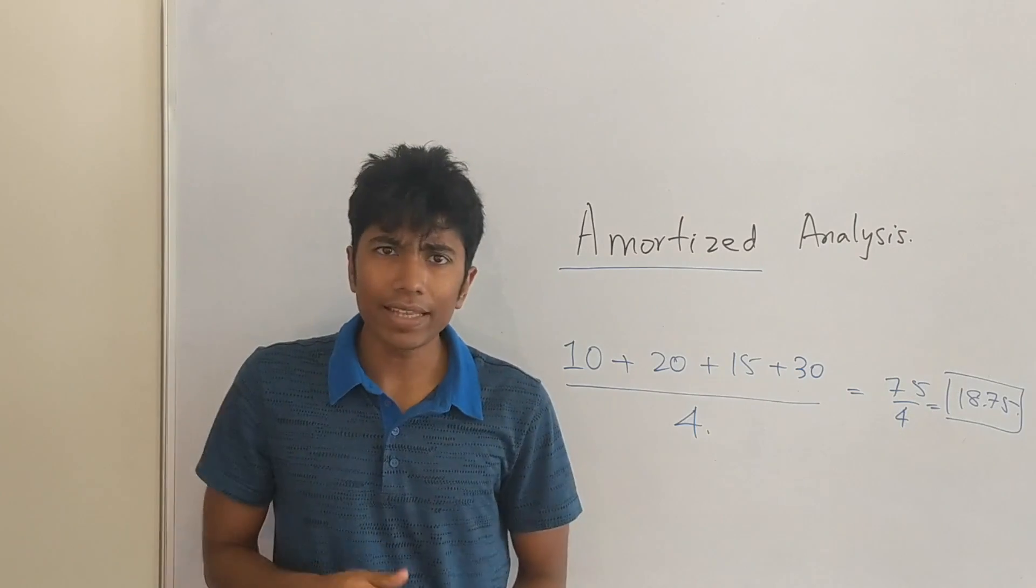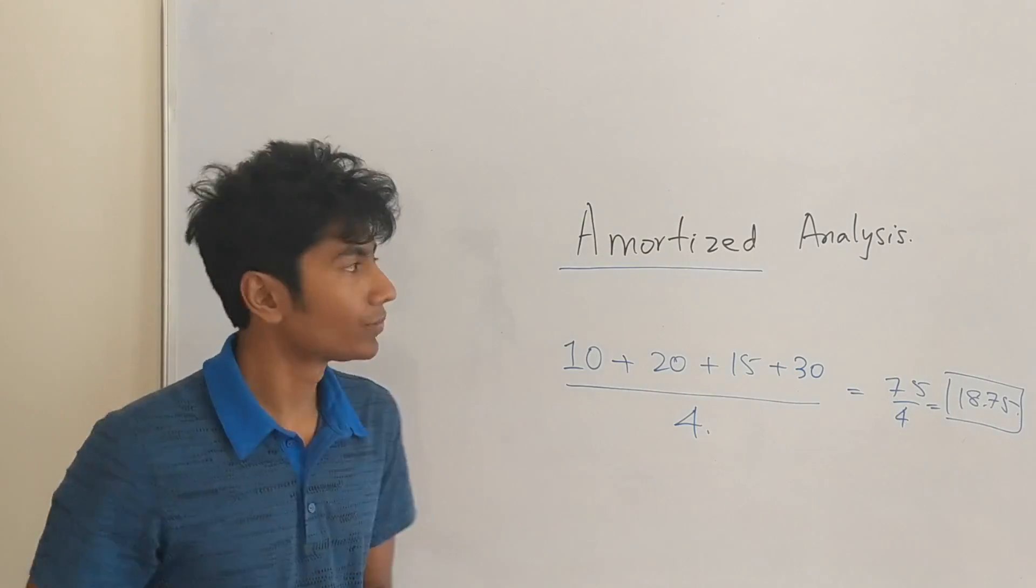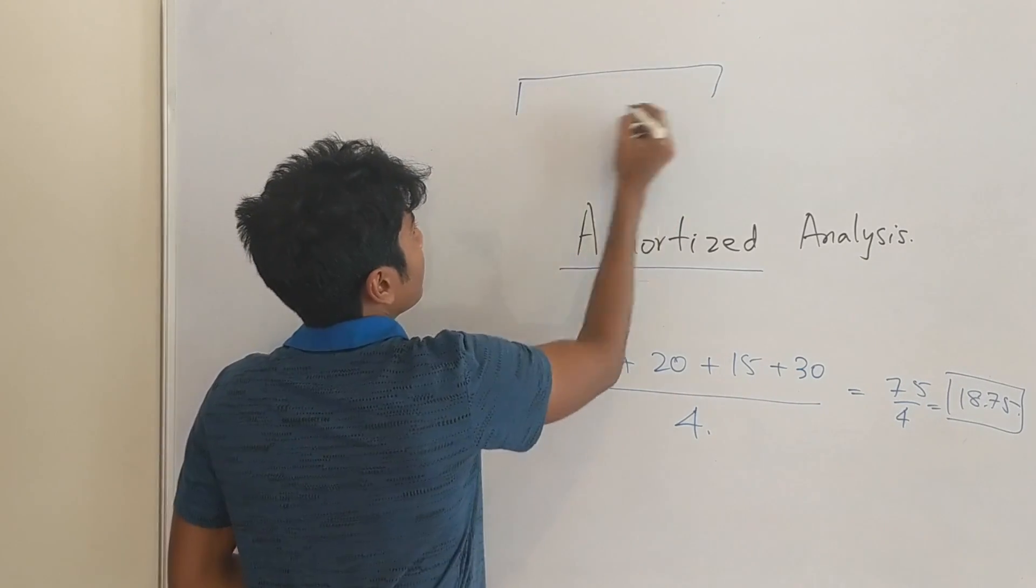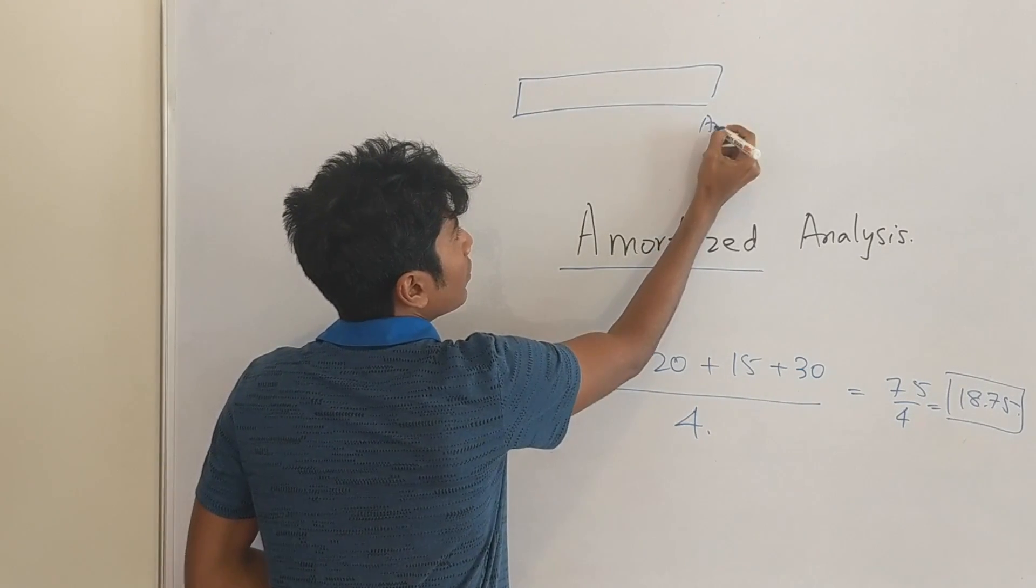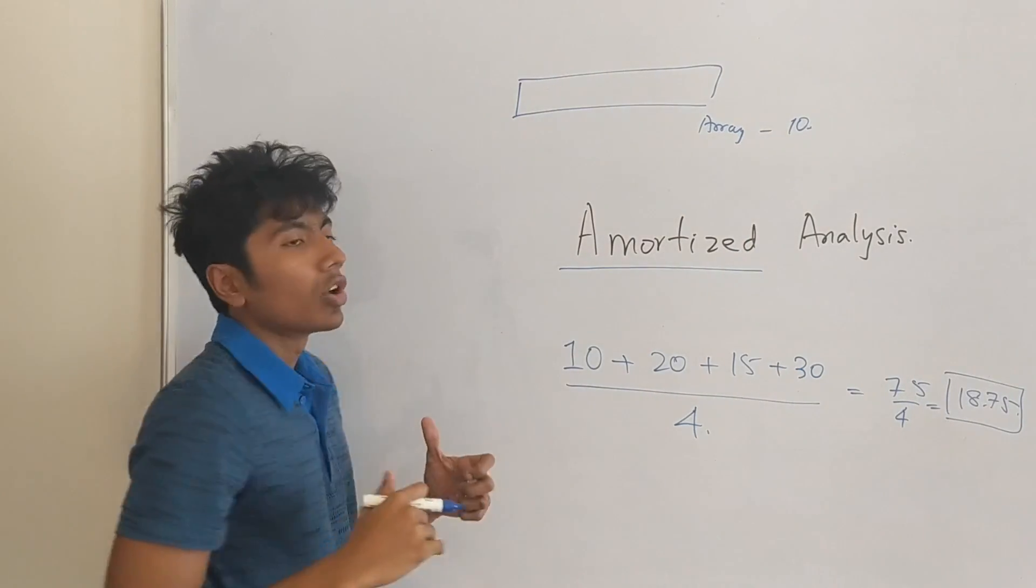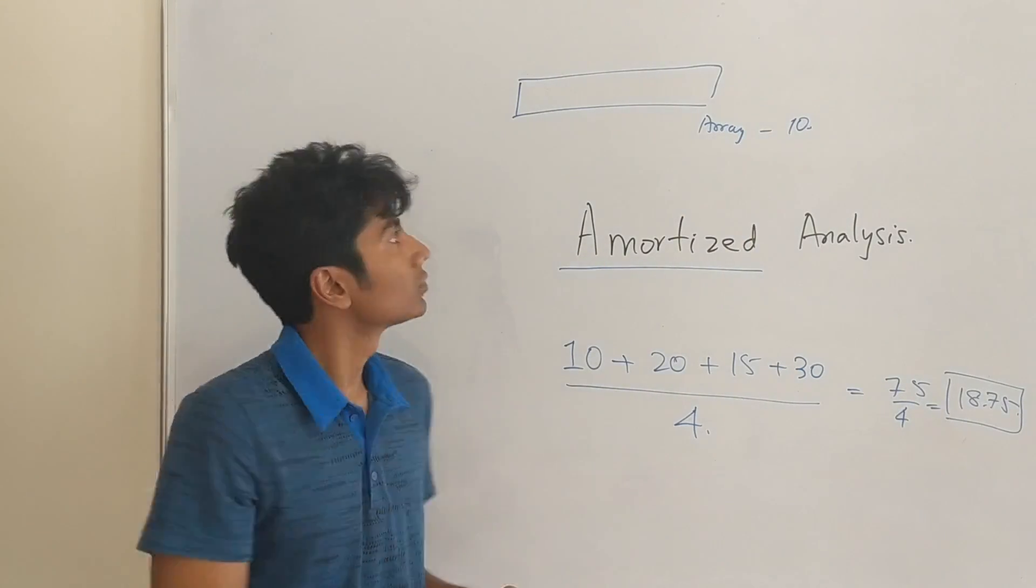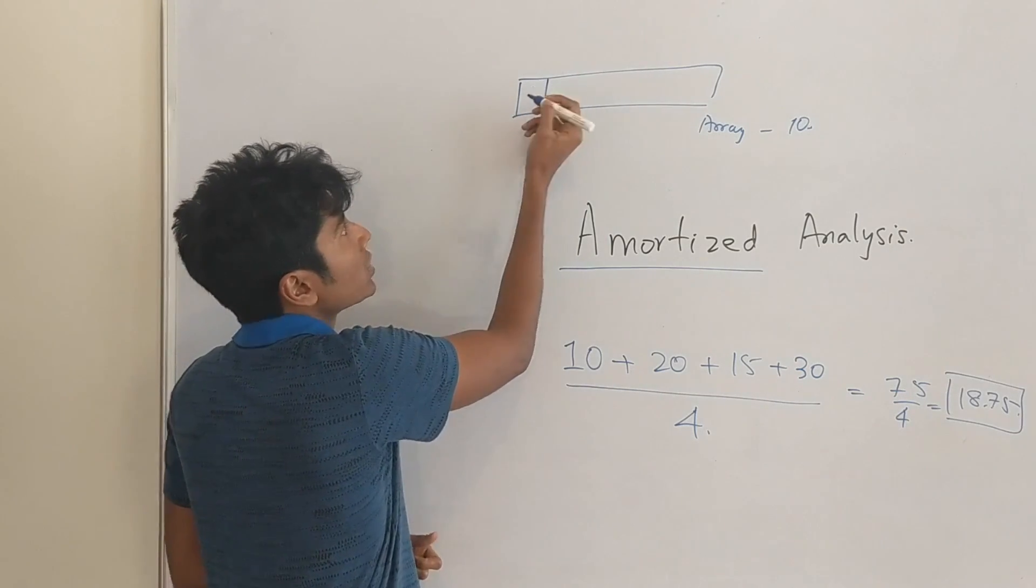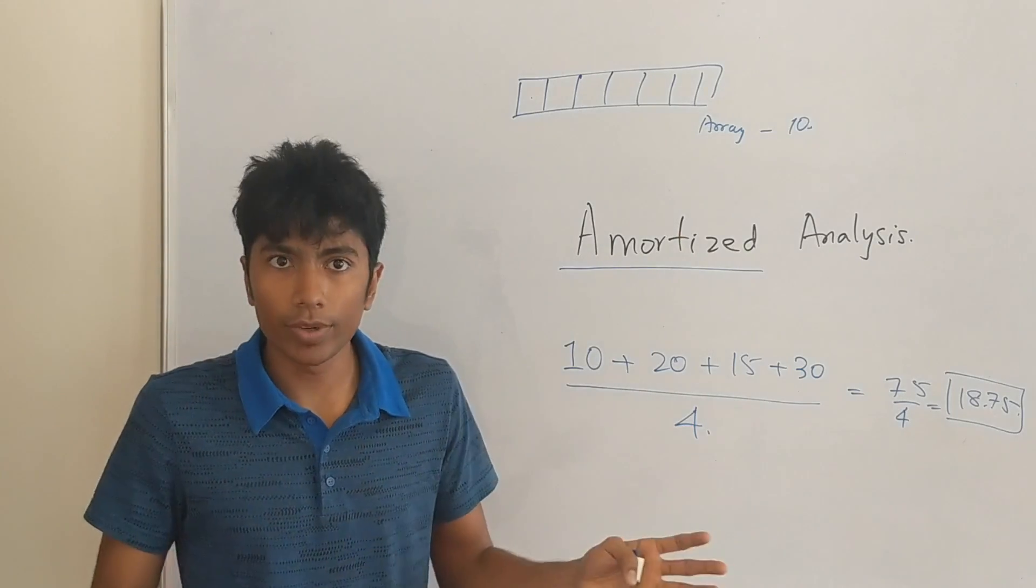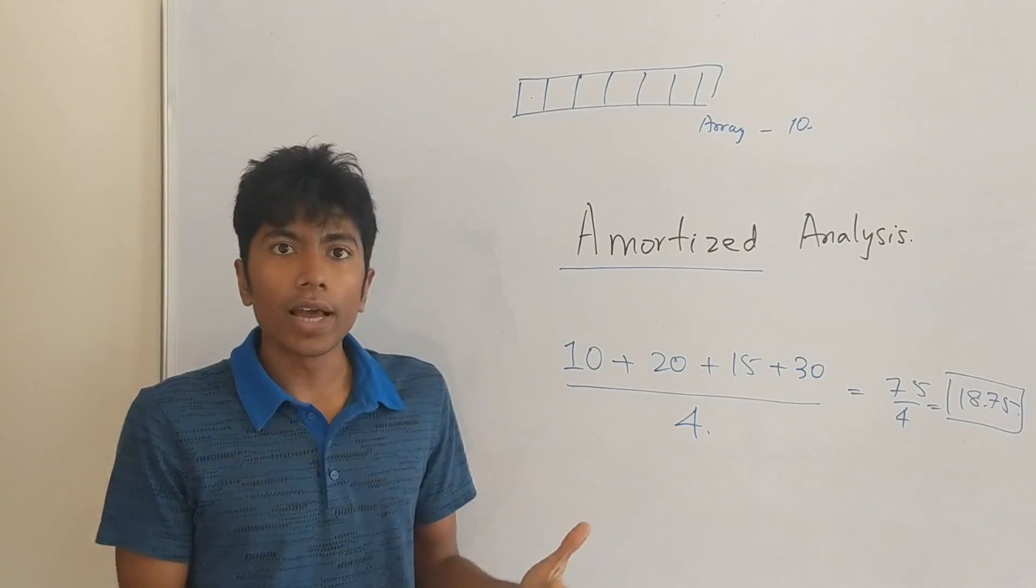So let's take a very simple example. Let's take an array list. Initially you have an array of size 10. Now you are making insertions in this array. So you insert an element, you insert another element, so on and so forth up till you hit the maximum number of elements which is 10.